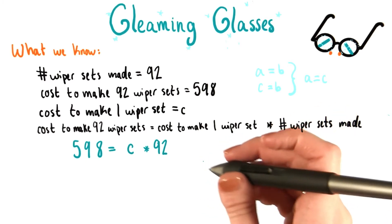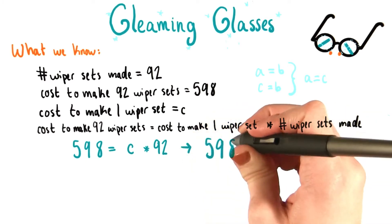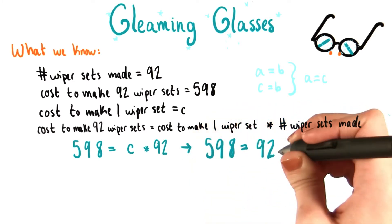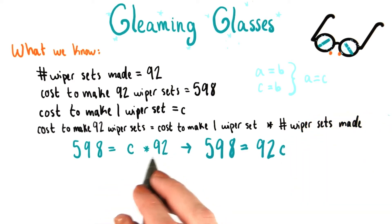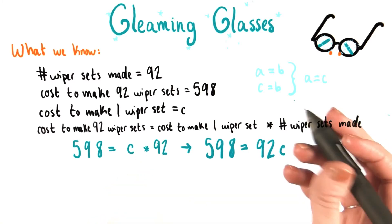There's one slight adjustment I'm going to make. I'm going to say that 598 equals 92c. So remember that we normally write the coefficients, just plain numbers at the front of terms, and then the variables following them.